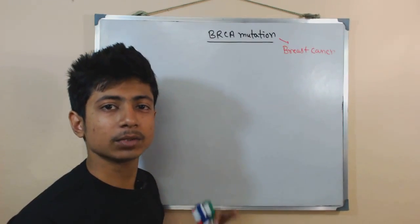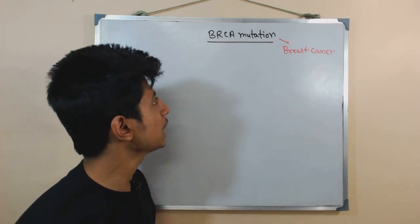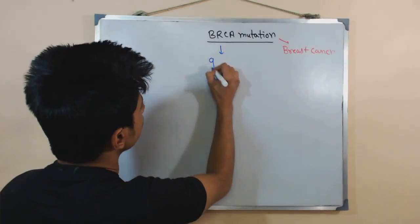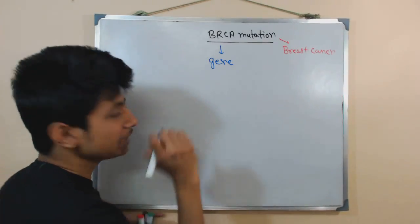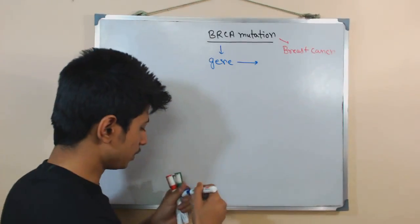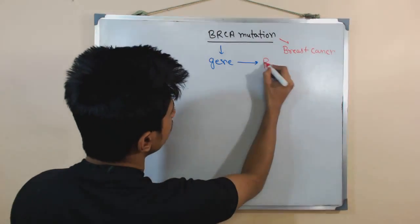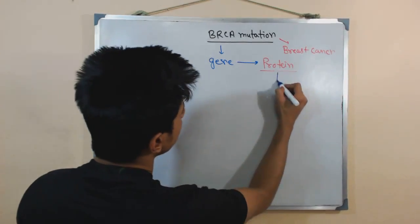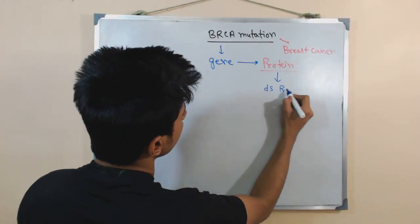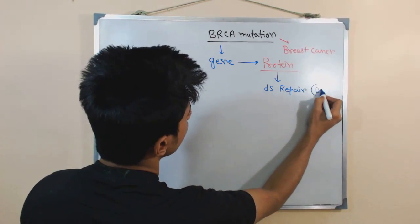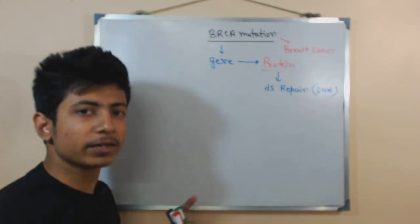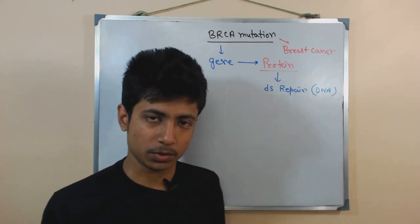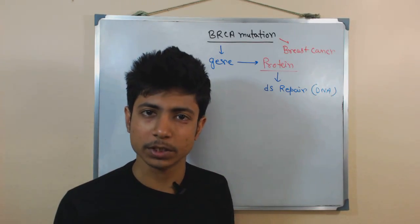For understanding BRCA mutation you need to know some basic things about cell biology and how cell signalling works. BRCA is a gene that is present in our body, and the gene produces a protein which is responsible for DNA repair — specifically it is required for double-stranded DNA repair.